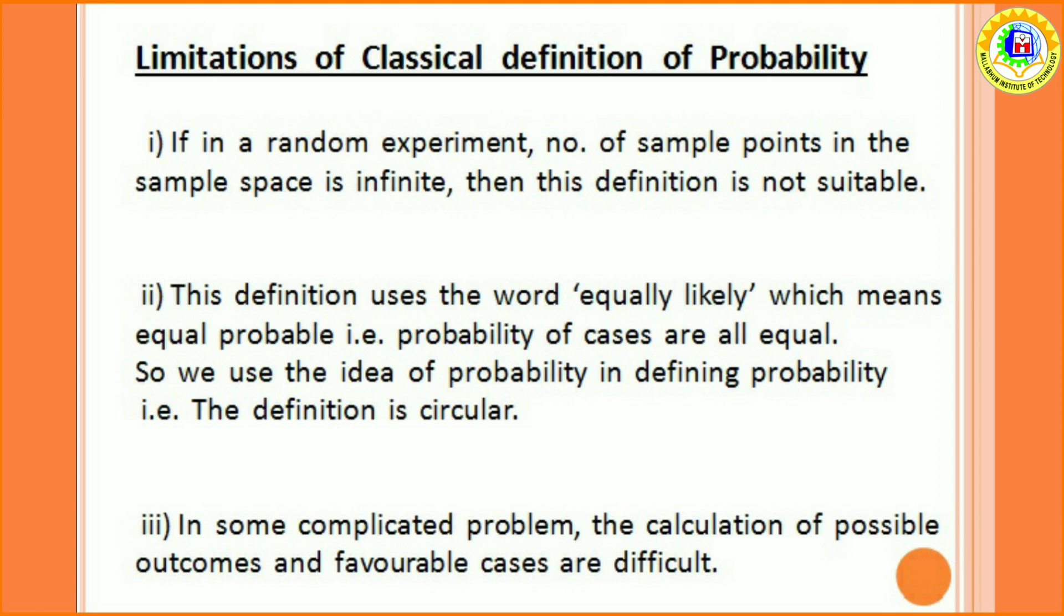Number two, this definition use the word equally likely, which means equal probable. That is probability of cases are all equal. So, we use the idea of probability in defining probability. That is, the definition is circular. Number three, in some complicated problem, the calculation of possible outcomes and favorable cases are difficult.